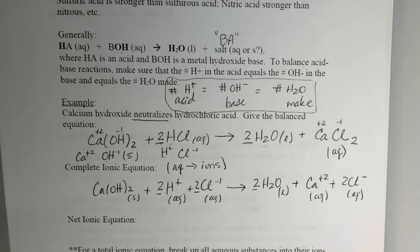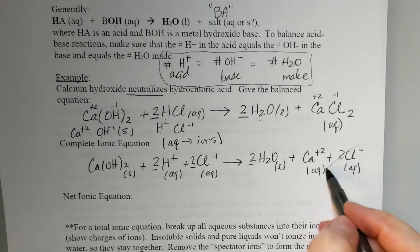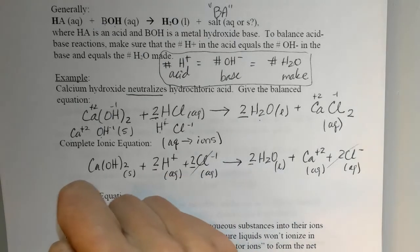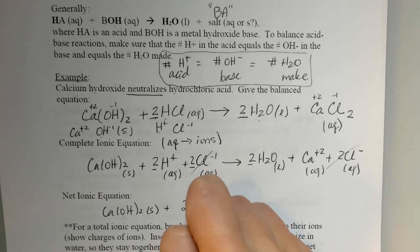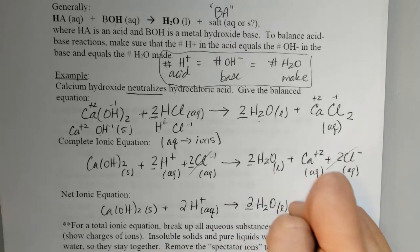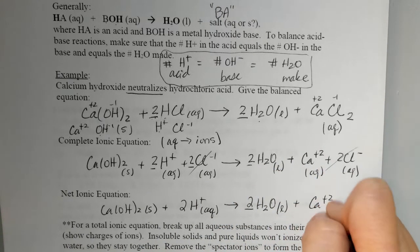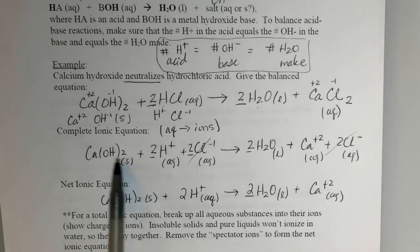In terms of spectator ions, when I go to simplify this for my net ionic equation, the only ion that will cancel out is the chloride. So the calcium hydroxide solid would still be there in the net ionic equation, combining with the two hydrogen ions. On the product side, we would form two waters and the calcium ion would then be dissolved in solution. So that net ionic equation, we simplified it, but we can only simplify it by taking out the chloride spectator ion. Everything else showed a change. When you go to write ionic equations, just make sure you remember solids always stay together and pure liquids always stay together.